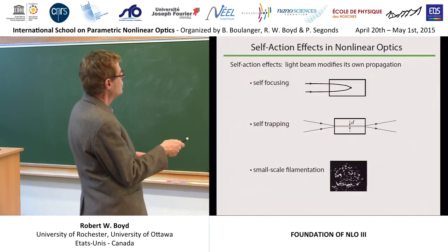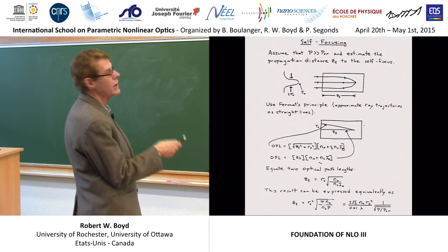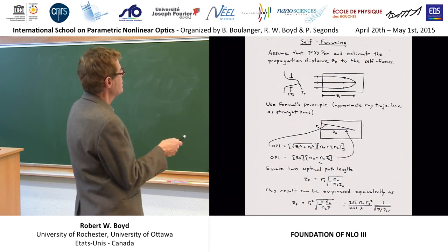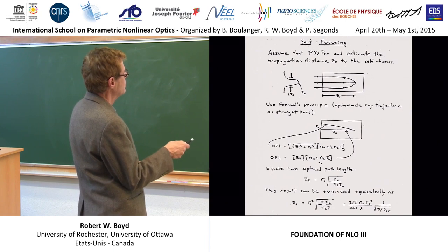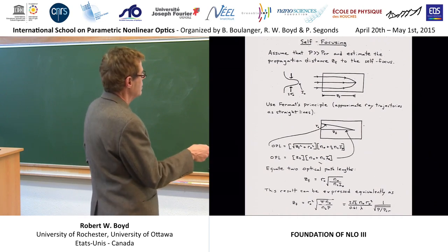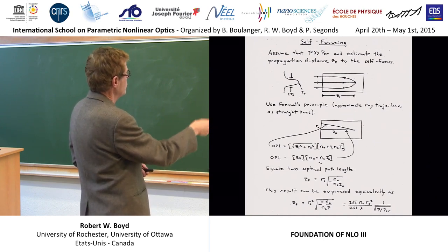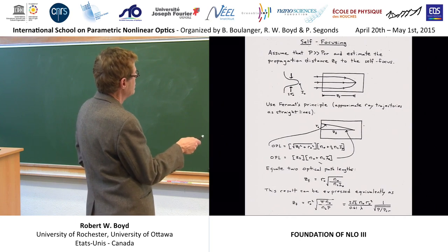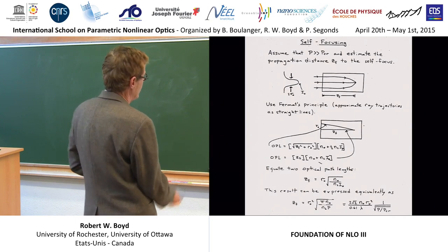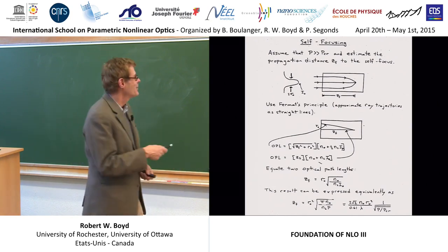First of all, let's assume that the laser power is greater than some critical power for self-focusing, we'll talk about that in a minute. Let's ask the following question: how far into the medium does the beam have to propagate before you reach the self-focus? Let's call this distance Z sub f. Here's your initial laser beam, roughly a Gaussian, peak intensity I naught, diameter twice R naught. And we use — we are in France — we use Fermat's principle to do this.